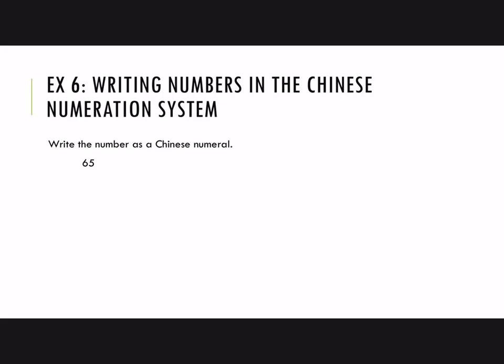Let's try going the other direction. Write Hindu-Arabic numerals as Chinese numerals. So 65. Break this up into ones, tens, hundreds, et cetera.